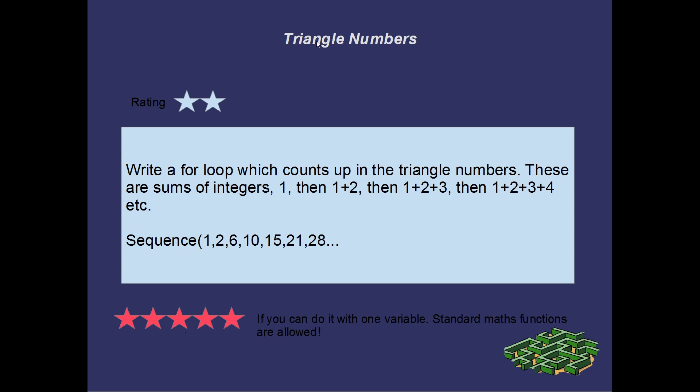Alrighty. Ah, the first 5-star problem. So this is extra, extra hard. But there is a 2-star version as well. So the triangle numbers. I want you to write a for-loop which counts up in the triangle numbers. And these are the sums of integers. So, yeah, 1, then 1 plus 2 is the second triangle number. Then 1 plus 2 plus 3 is the third triangle number. Et cetera, et cetera. But if you're really, really keen, then you can have a go at doing this with one variable. Yeah, you can use standard maths functions if you want. So like log or square root or that sort of thing. But if you can manage to write out the triangle numbers, or get a for-loop to generate the triangle numbers using a single variable, you have gotten 5 stars. That's going to be amazing.